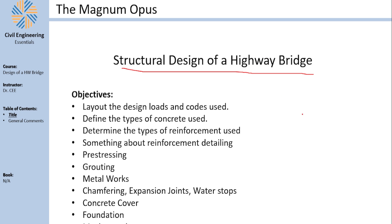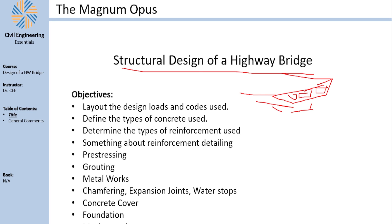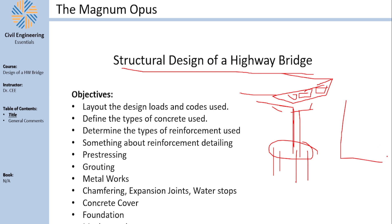The highway bridge I have is a curved highway bridge made out of pre-stressed concrete and it's going to be a box girder. It's basically the most famous type for curved bridges. The superstructure, the columns, the piles, the retaining wall, and the approach slab will all be designed from A to Z.